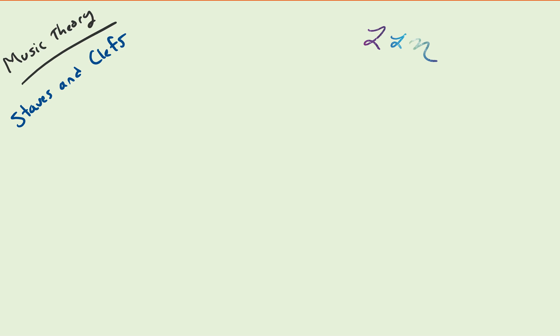We're going to talk about the two fundamental things that are used in musical notation. To define, a staff consists of five lines and four spaces.